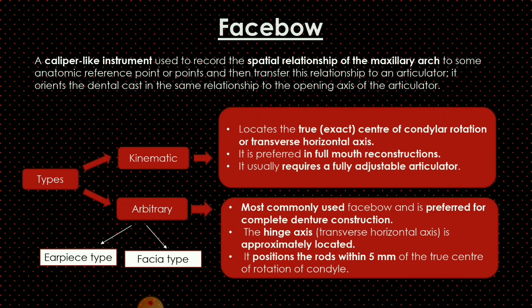Face bows are classified as kinematic face bow and arbitrary face bow. The kinematic face bow locates the true or exact center of condyle rotation, whereas the arbitrary face bow positions the rods within 5 mm of the true center of rotation of the condyle — making kinematic more accurate than arbitrary. Arbitrary face bows are further classified as earpiece type and fascia type.